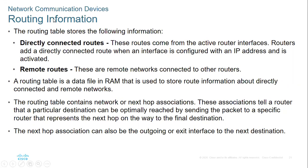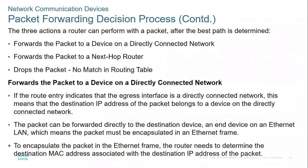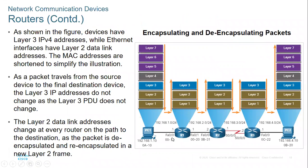The router keeps directly connected routes and remote routes in its routing table. The networks directly attached to a router's interfaces are called directly connected routes. Networks that belong to other routers are called remote routes. This router learns about those remote routes through route exchange with neighboring routers — that is how this router can reach PC2.